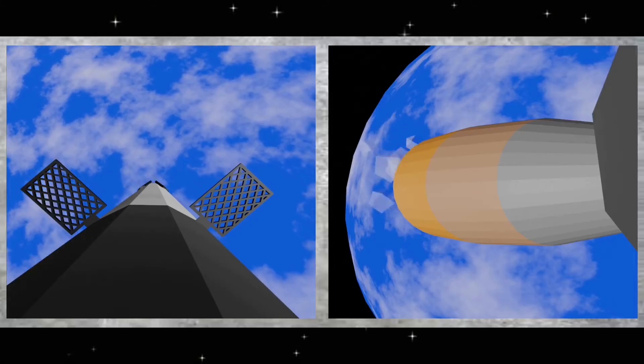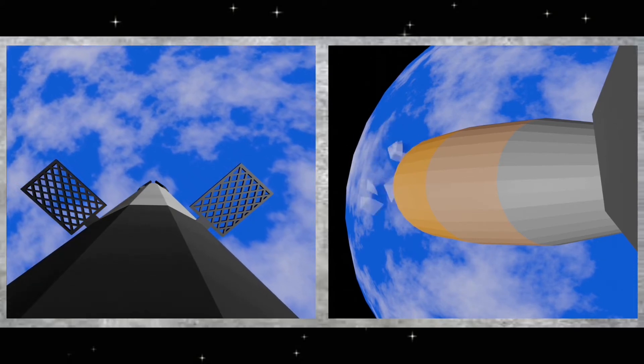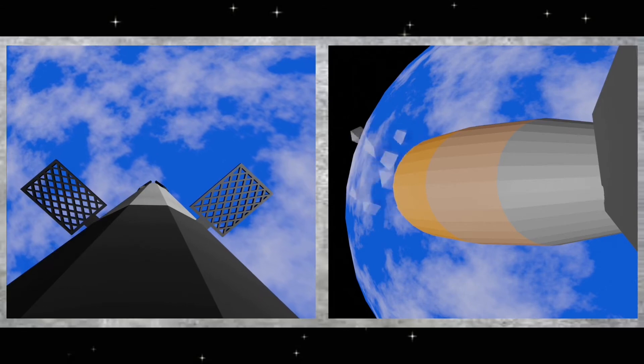And there you can see the two fairing halves have separated and fallen away from the vehicle, exposing the 143 spacecraft to the vacuum of space. And as a reminder, our recovery vessel Miss Chief will be attempting to recover the fairing halves today from the water.